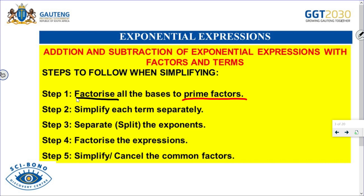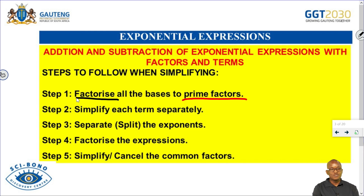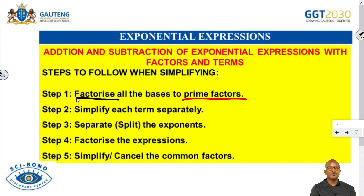Step number two: we must simplify each term separately. Step number three: we must separate or split the exponents with their bases. Step number four: we must factorize the expressions. Remember we factorize by taking out the common factor. Step number five: we must simplify or cancel the common factors. Those are the five simple steps that you need to follow when dealing with exponential expressions.